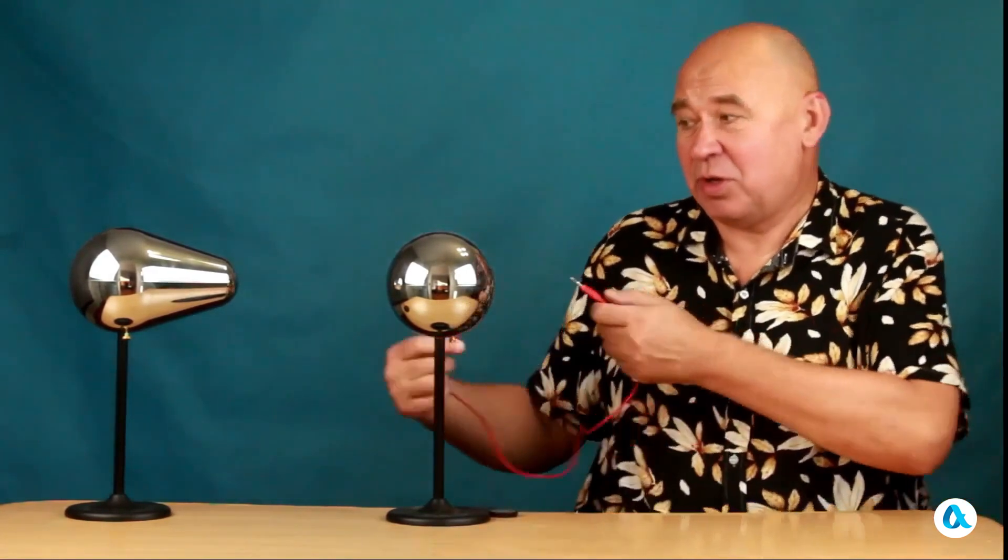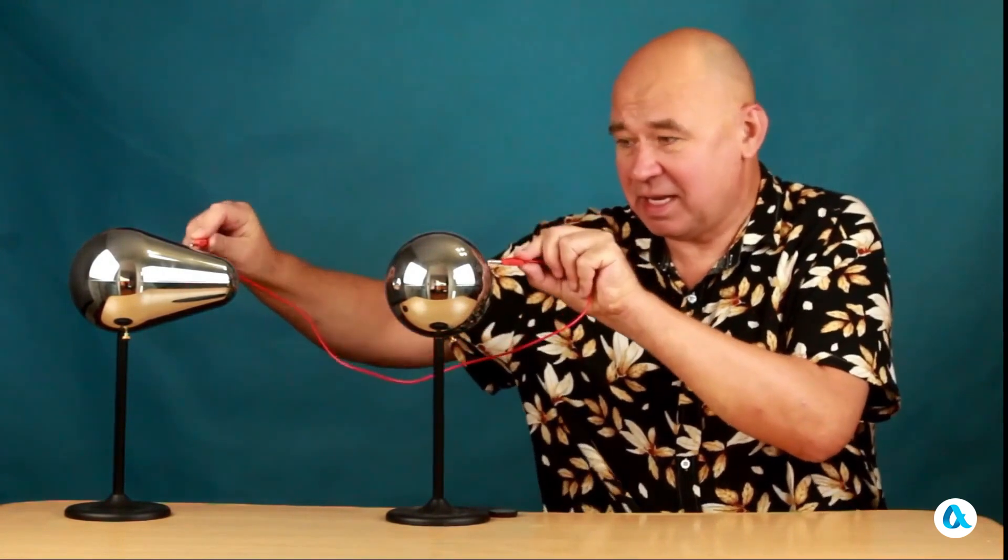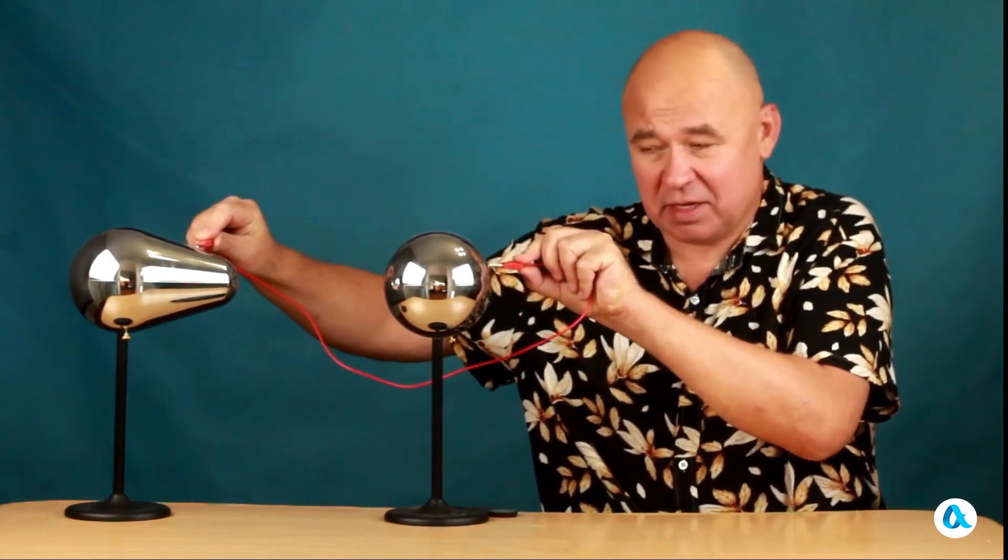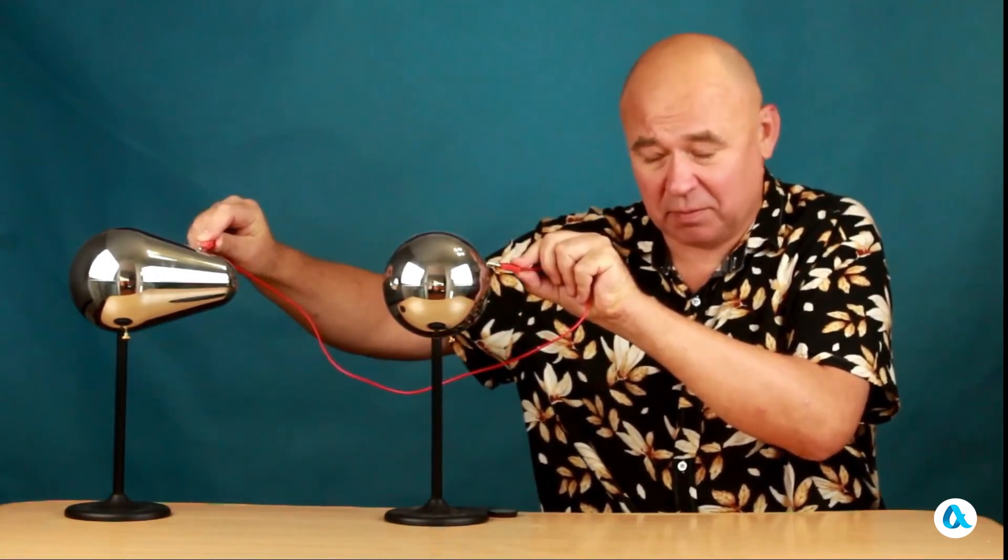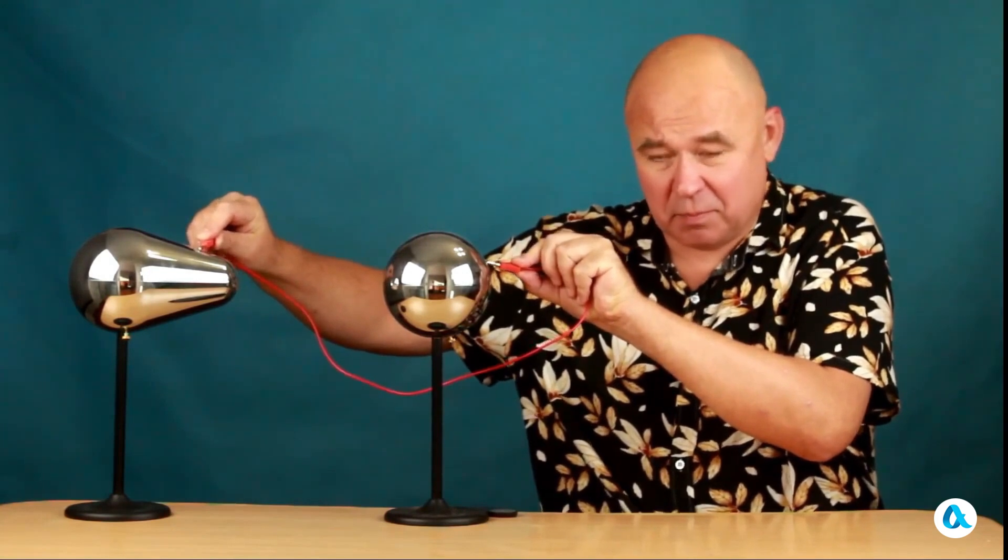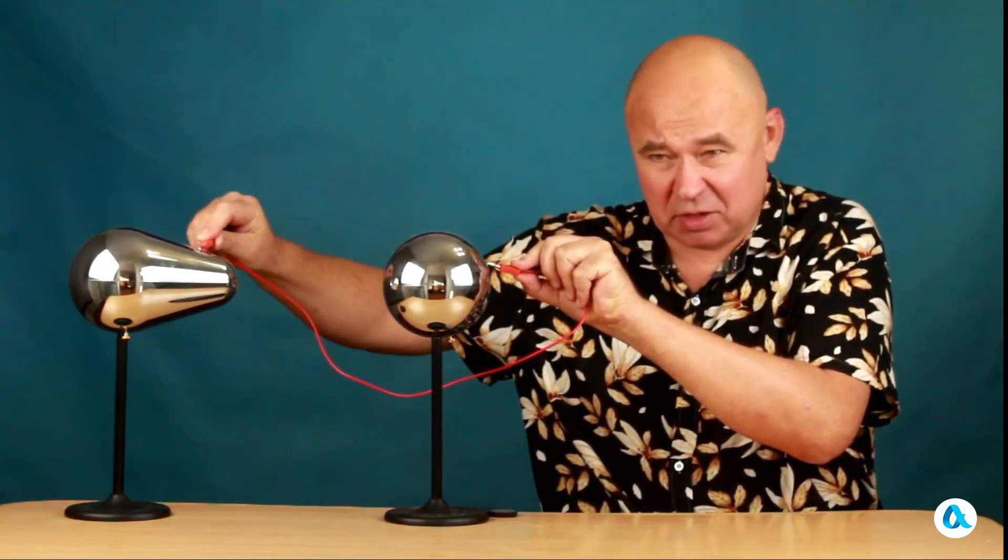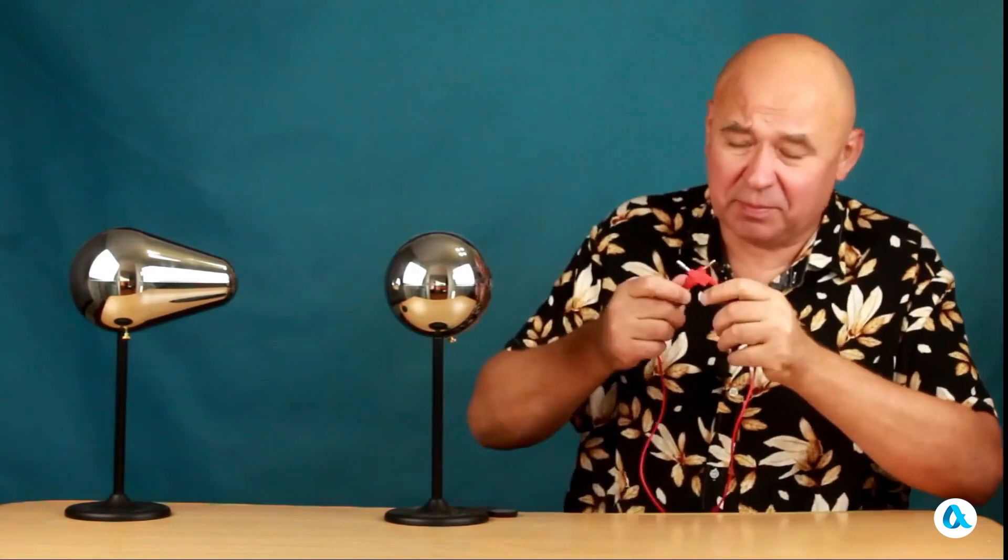Here on my table I have two metallic bodies on stands. Imagine that one of them is charged while the other is not yet. However, this is not very important. Then I take and connect these two bodies with a wire, and part of the charge from the charged body flows to the one that was not charged.